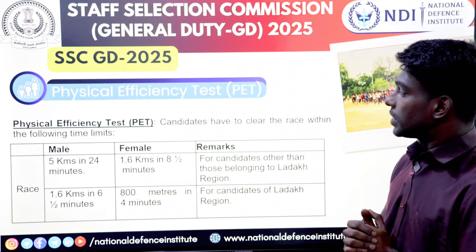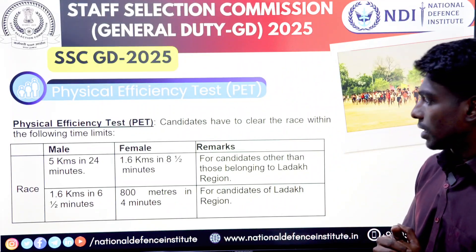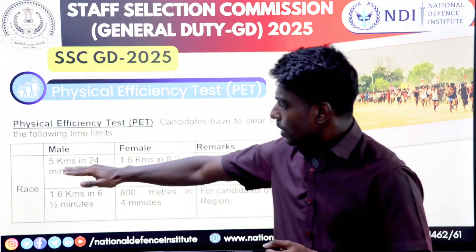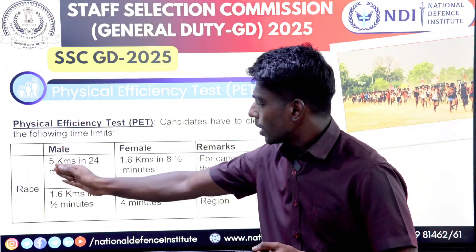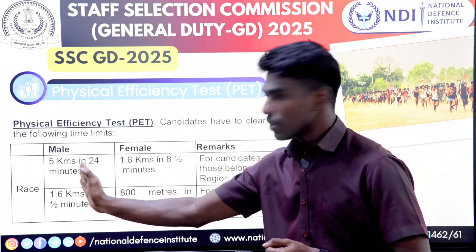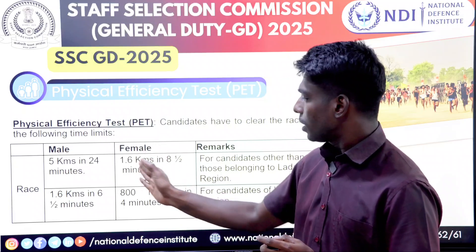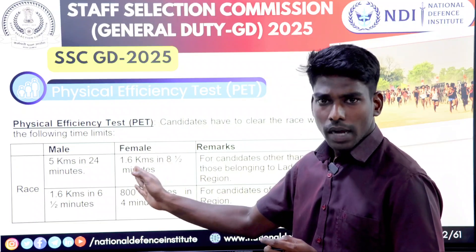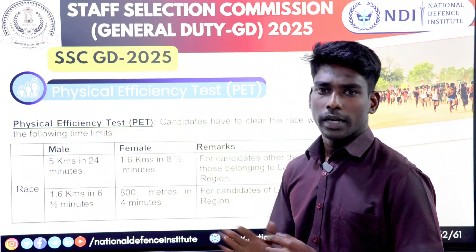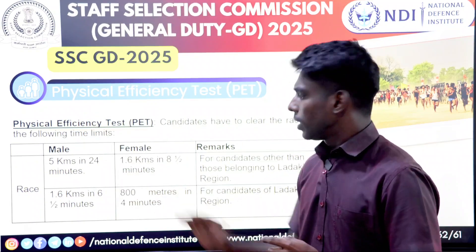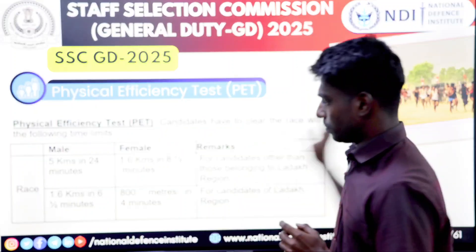For the Physical Efficiency Test: for males, it is a 5 km run in 24 minutes, and for females, it is a 1.6 km run in 8.30 minutes.